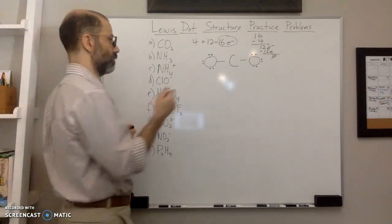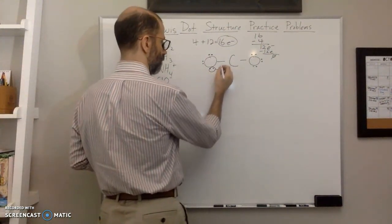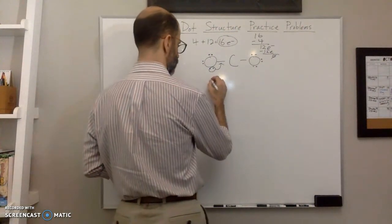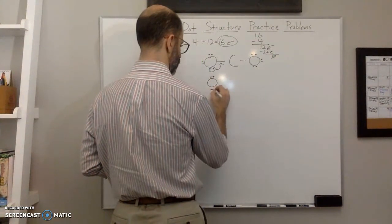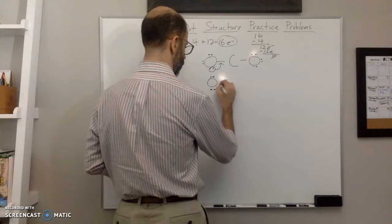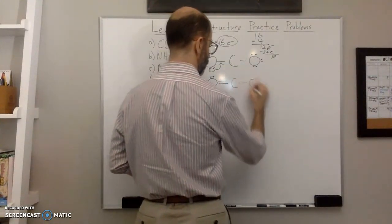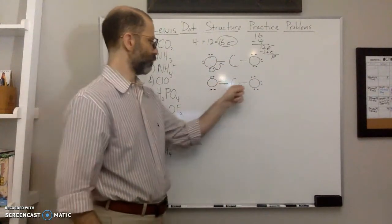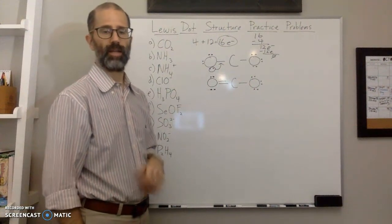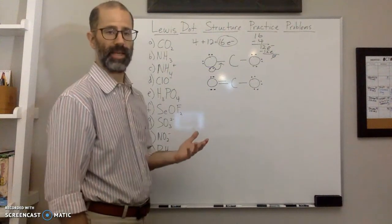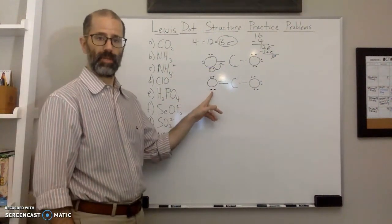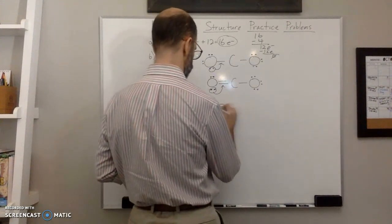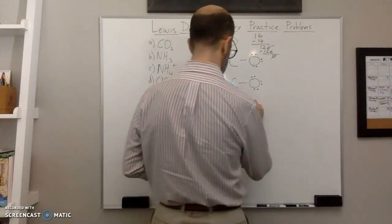I can take a lone pair from one oxygen and move it to create a double bond between that oxygen and carbon. Now carbon has three bonds — six electrons — but still no octet. I could then create a triple bond with the other oxygen, giving carbon an octet, but let me evaluate whether that's actually the right approach.